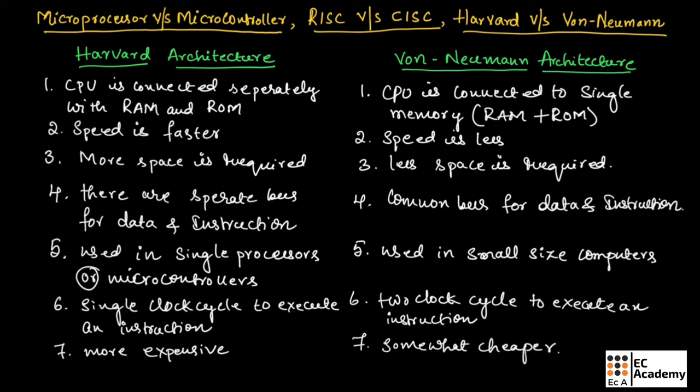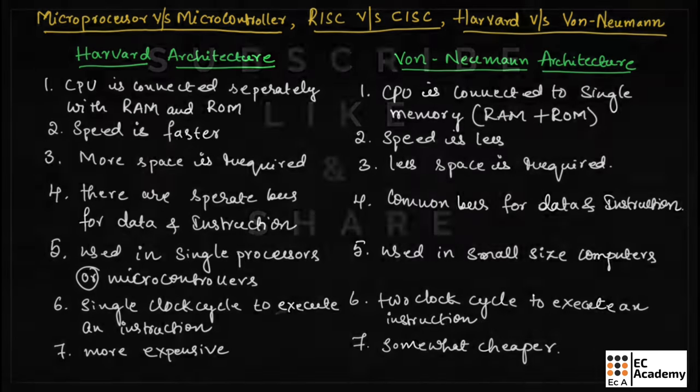This is about the difference between microprocessor and microcontroller, RISC and CISC architecture, and Harvard and Von Neumann architecture. Hope you have understood the topic. Thank you!